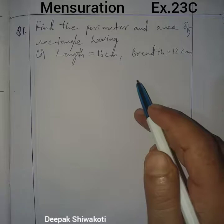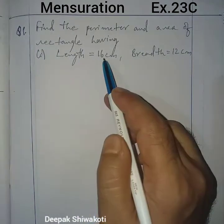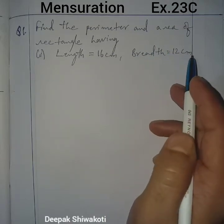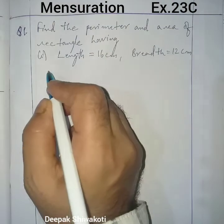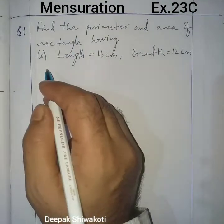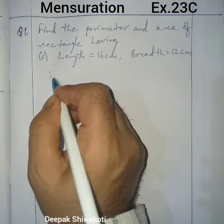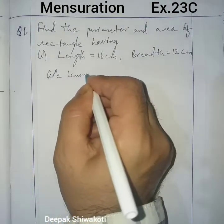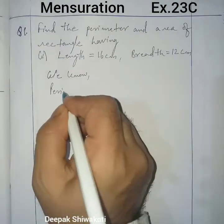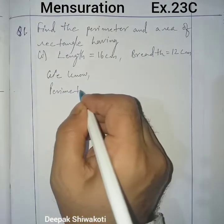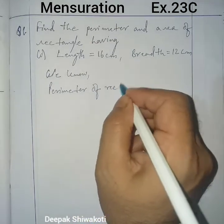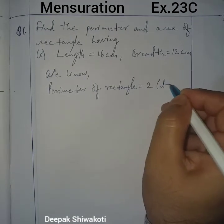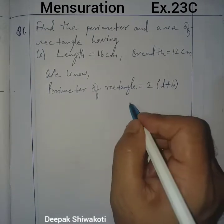Question number 1 is given. We know the formula of perimeter of a rectangle and the formula of area of a rectangle. We know perimeter of rectangle equals two times length plus breadth.